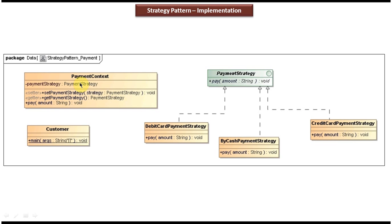On the left side, you can see a PaymentContext. The customer has to choose one of the payment methods and set that payment strategy in the context by calling the setPaymentStrategy() method. Once the strategy is set, the customer will pay using that particular strategy. For example, if the customer chooses DebitCardPaymentStrategy, they set it in the context and then pay by calling the pay() method of PaymentContext.